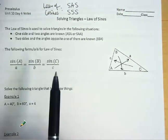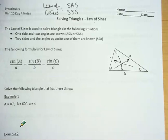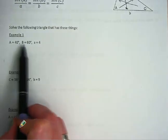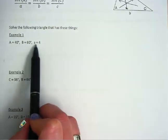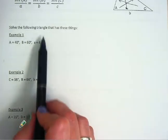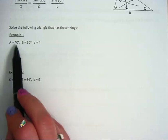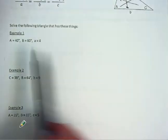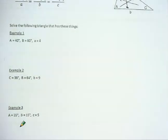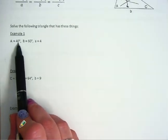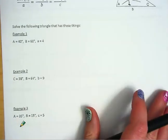In this first example we are given two angles A and B and one side a, and we're asked to solve the triangle — meaning we need to find all the missing values. If I have angles A and B, I need to find angle C. If I have side a, I need to find sides b and c. I'll work through example one and then ask you to pause the video and do the other two examples on your own before comparing with my work.